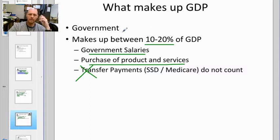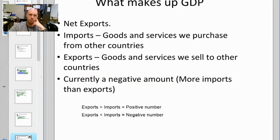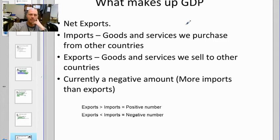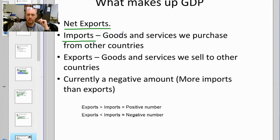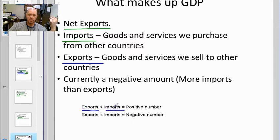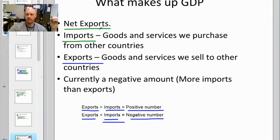So those are the three biggest drivers of Gross Domestic Product. In our modern world, we send stuff all over — to Canada, Mexico, China, Japan, Korea — so we have to deal with net exports. Imports are goods and services we purchase from other countries; exports are what we sell to other countries. The formula: exports minus imports. If exports exceed imports, it's a positive number; if imports exceed exports, it's negative. Currently in the U.S., we import more than we export, so we have a net negative number for net exports.